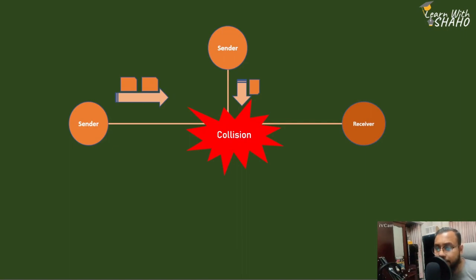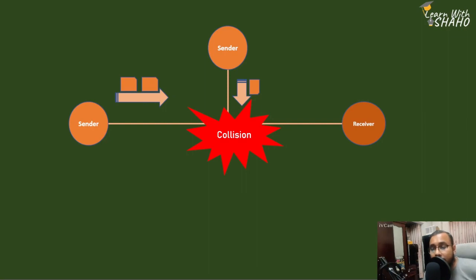When two senders try to transmit and there is a collision, consider this scenario: suppose the transmission time from sender to receiver is one hour and the propagation time is also one hour. If at 30 minutes into transmission another sender starts transmitting, a collision will occur. When a collision occurs, the data goes back to the sender.